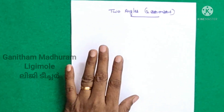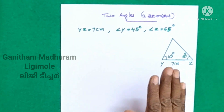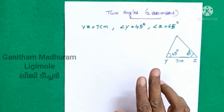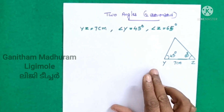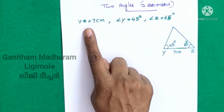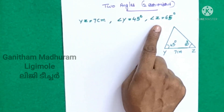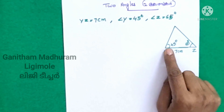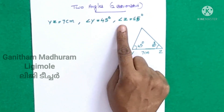Let's try it in the textbook. I will draw triangles of the following specifications: angle Z is 65 degrees, YZ is 8 cm, and angle Y is 45 degrees. Let's try and draw it here.